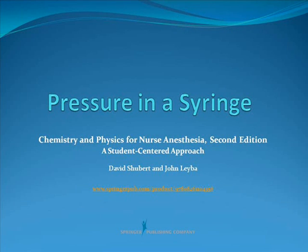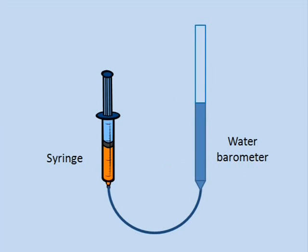In this video, we're going to use a water barometer to measure the pressure that develops inside a syringe. We'll also look at the effect that the size of the syringe has on the pressure that develops. This is a schematic of the apparatus that we'll be using. We'll start with a glass syringe and connect it with a piece of rubber tubing to a glass tube filled with water — which is, of course, a water barometer.